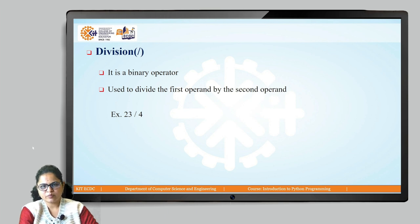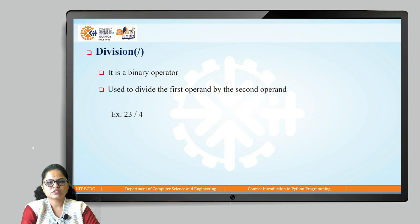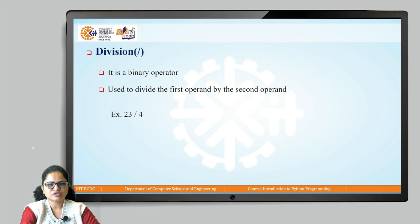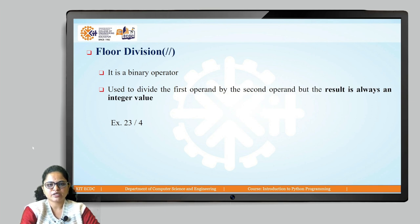Then division operator — it is also a binary operator used to divide the first operand by the second operand. For example, 23 divided by 4; slash is used to represent the division operator. Next is the floor division operator, also a binary operator which divides the first operand by the second, but the result is always an integer value. With a single slash, you get the result in floating point numbers. With the double slash floor division operator, you get the result in integer form only.